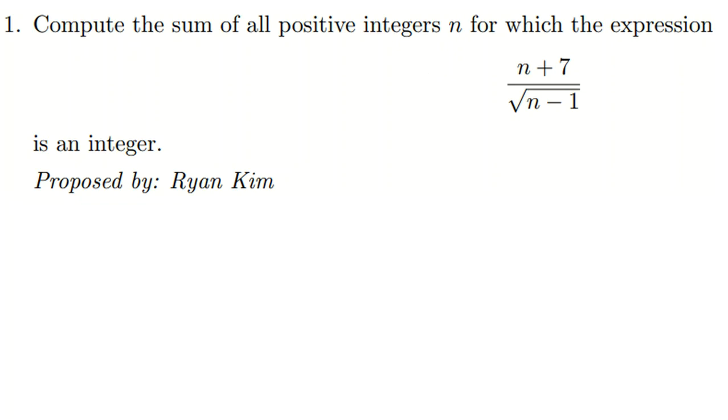So let's solve this problem. It says compute the sum of all positive integers n for which the expression (n + 7) over root (n - 1) is an integer. Okay, so because n is a positive integer, we say numerator is positive integer.